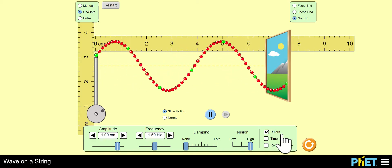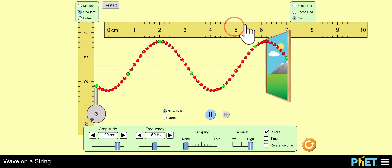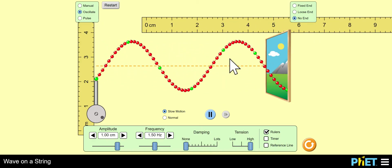Definitely want the rulers. That's really key. Now, the rulers, you can click and drag, and you can measure the wavelength.